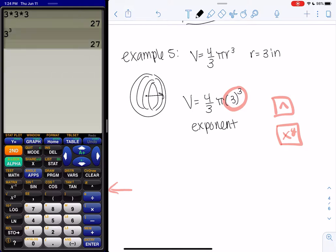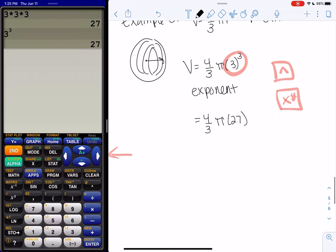And we get 27 either way. So we get four-thirds pi and then times 27, and now this is all multiplication and division, so we'll just multiply and divide left to right.